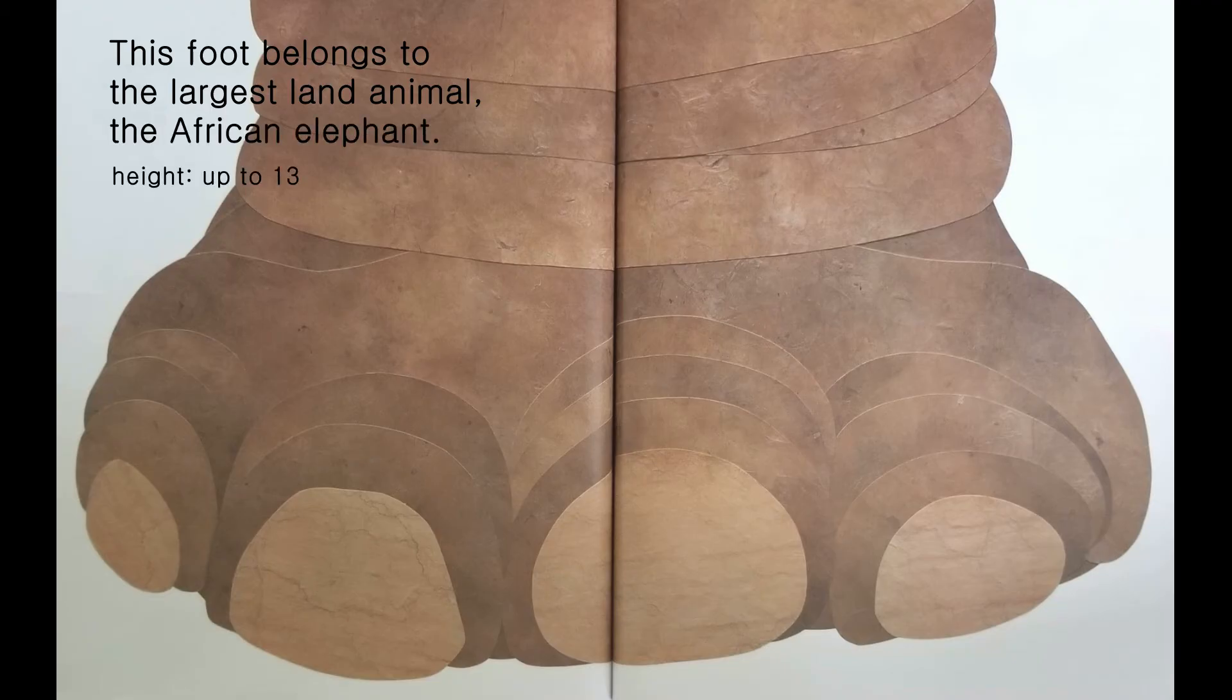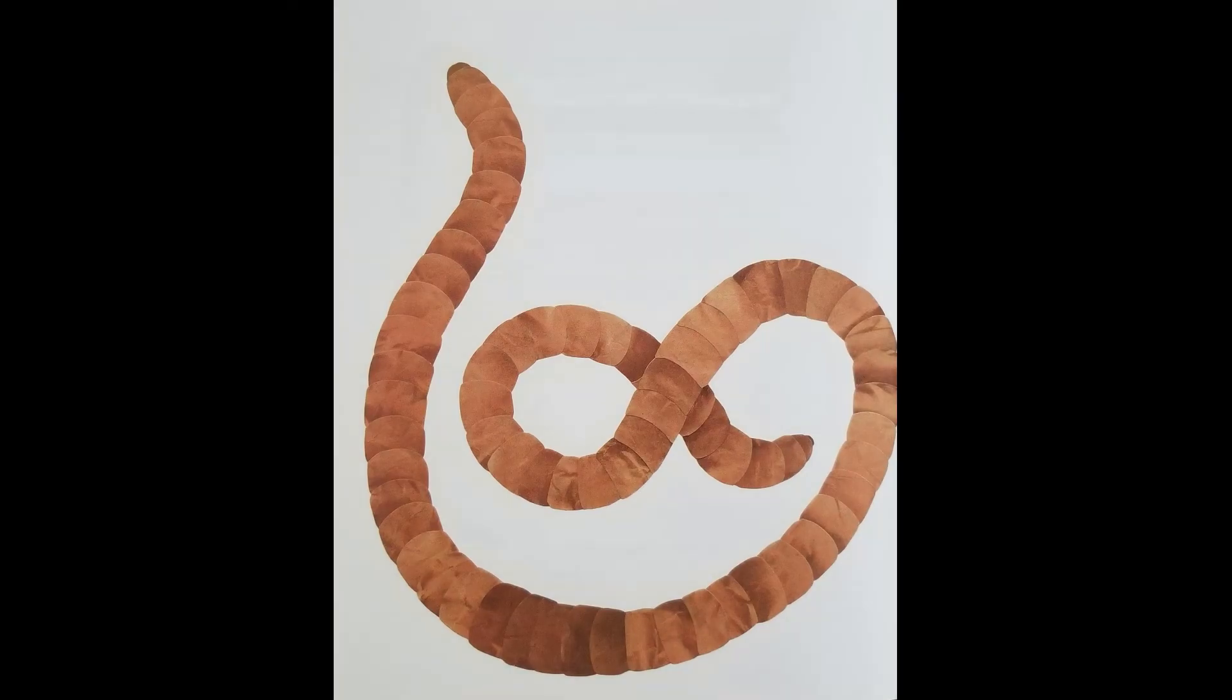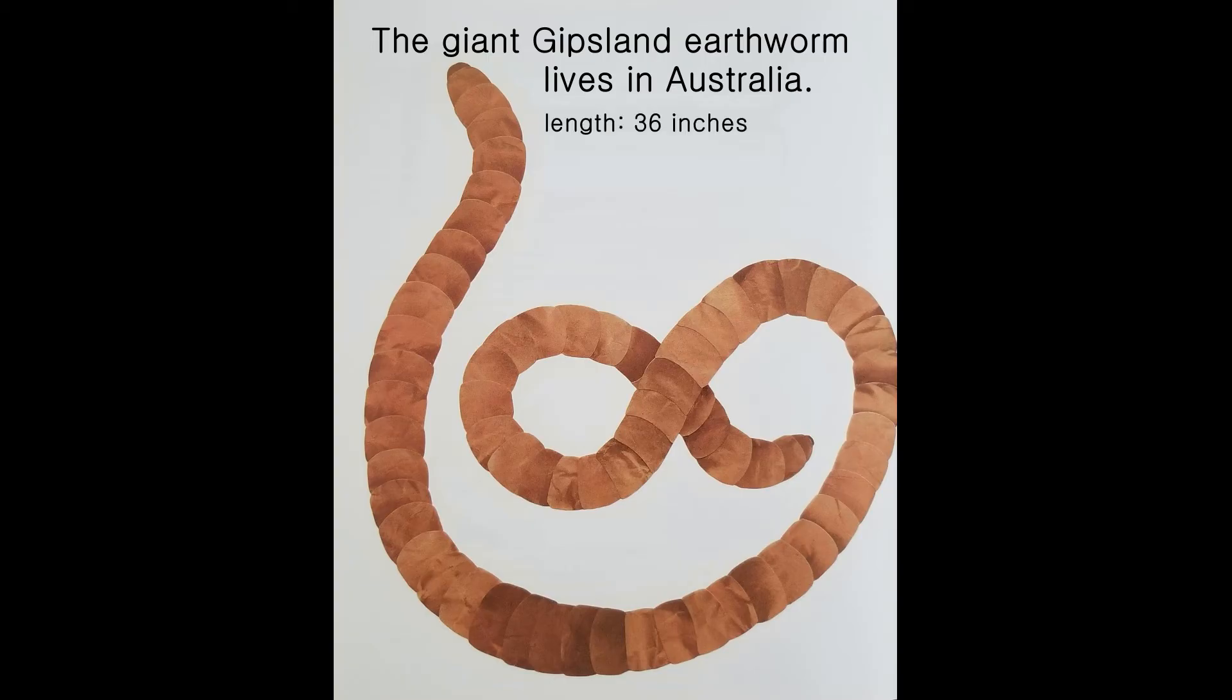Height up to 13 feet. Weight as much as 14,000 pounds. The giant Gippsland earthworm lives in Australia. Length 36 inches.